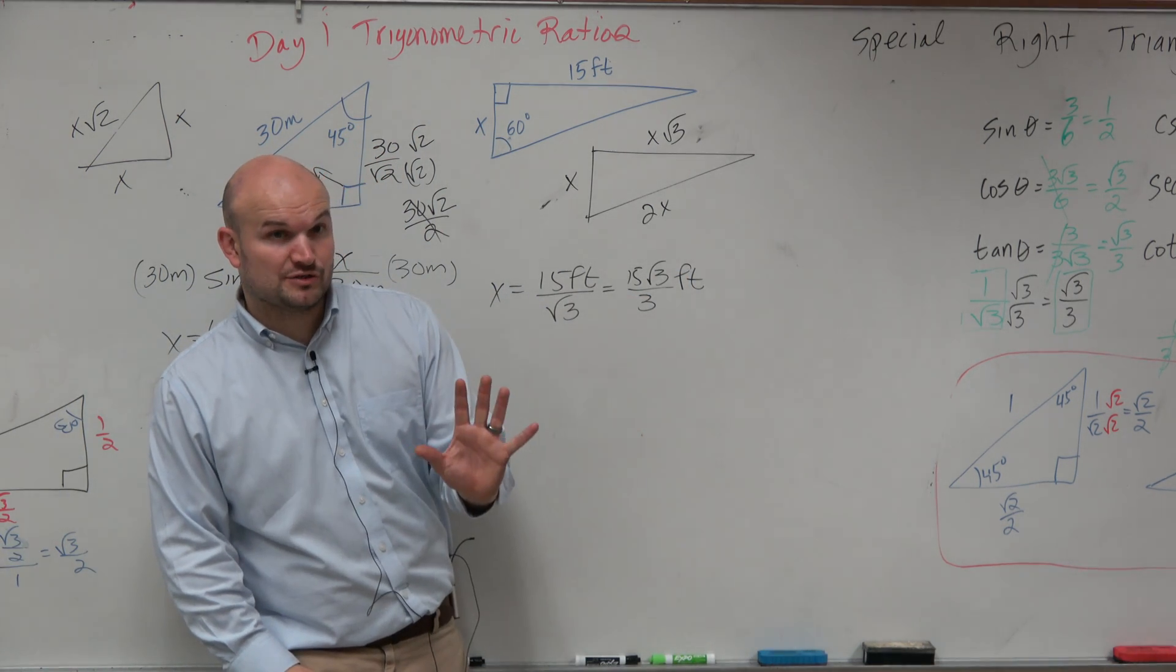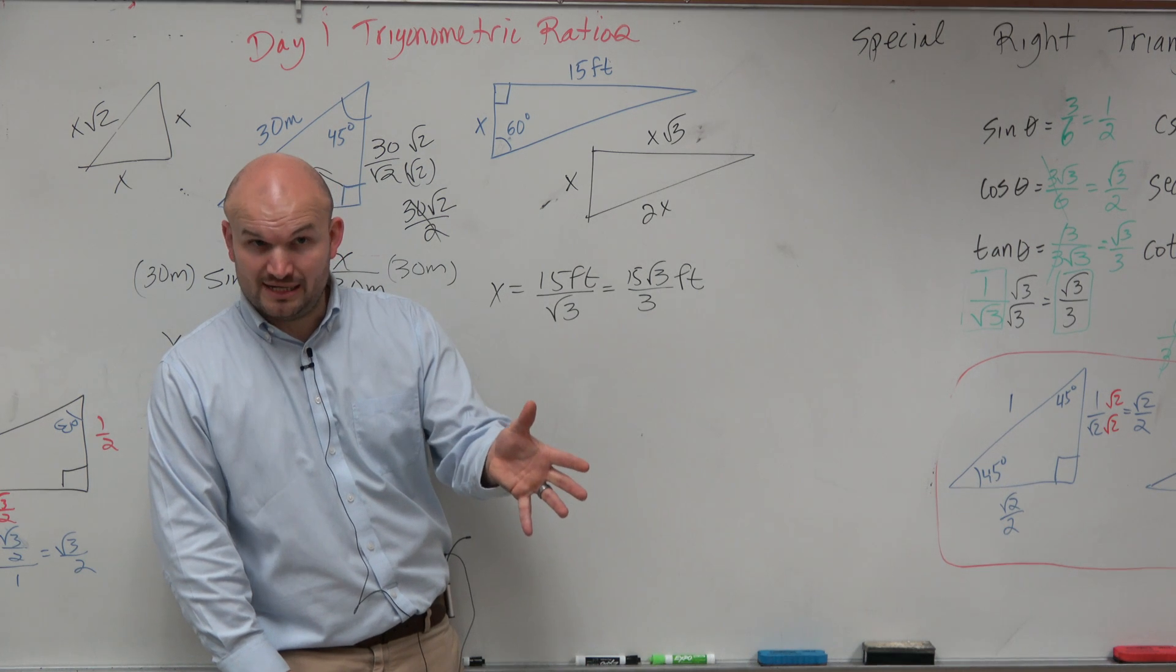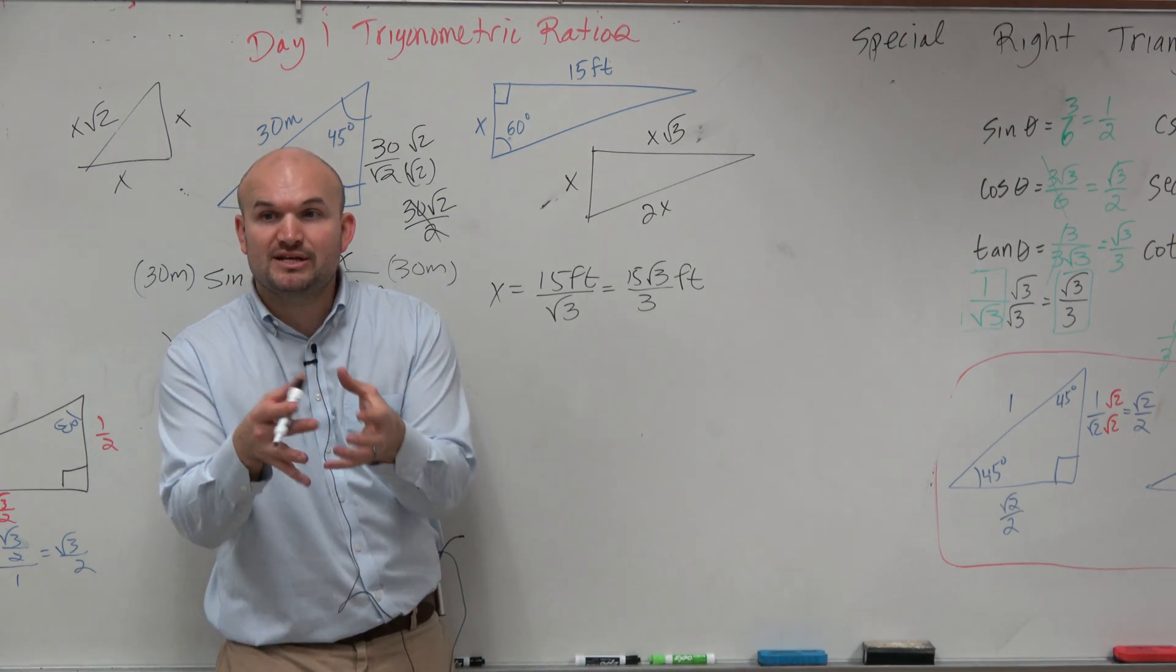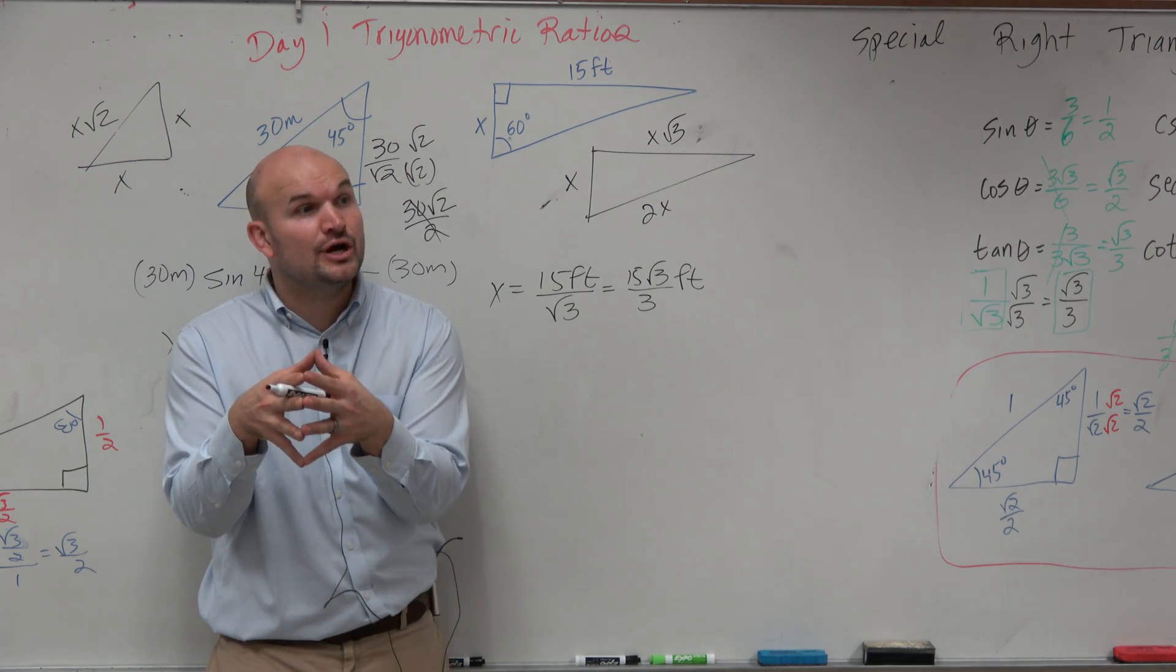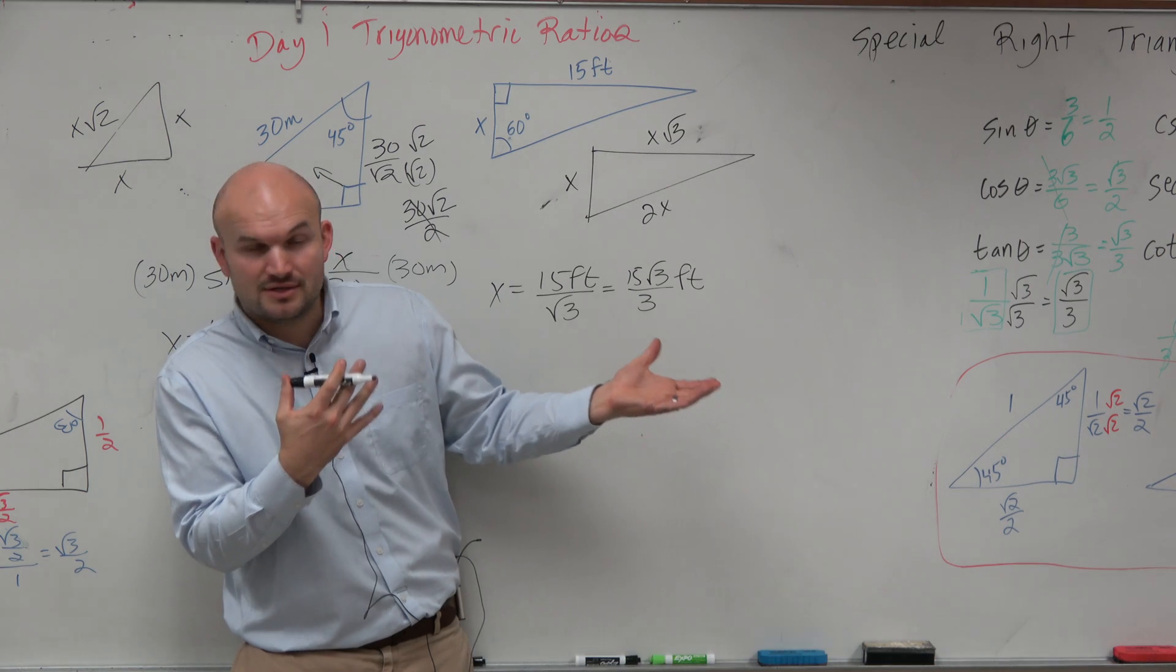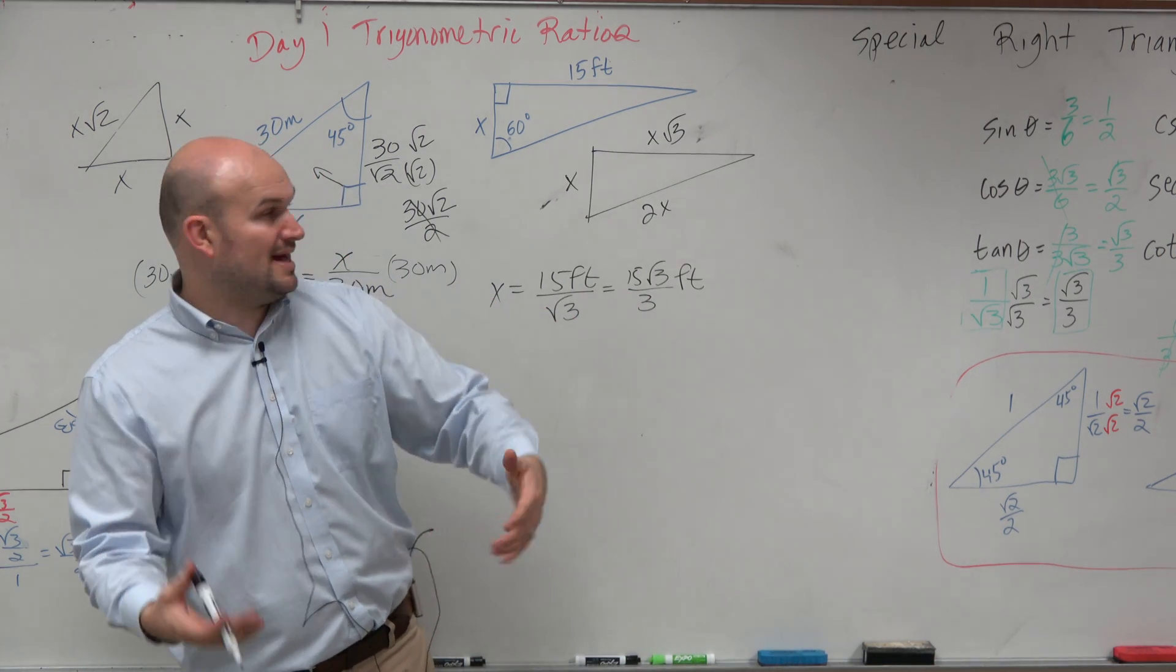So using your trigonometric ratios, you could do that. However, what we're going to be learning next, after these two problems, so I'm going to do two more problems, it's also important to make sure you can identify the trigonometric ratio. Because sometimes you can't do this with special right triangles.